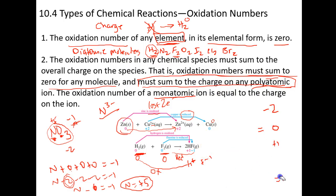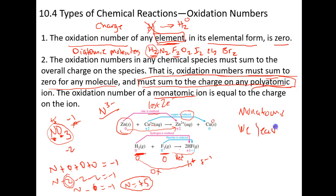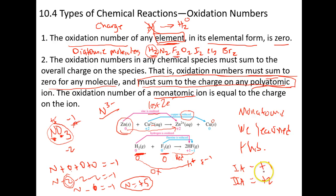For monatomic ions, it's the charge we've already learned. Everything in group 1A has an oxidation state of plus one. The 2A elements — calcium, strontium, barium, magnesium — are plus two. This isn't anything new; it's just a different name for charges we already know. The part I want to emphasize is the polyatomic part — that's new, that's something we haven't seen before.